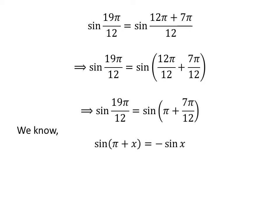We know the trigonometry identity sin of pi plus x is equal to minus sin of x. The proof of this trigonometry identity is explained in the video appearing in the upper right corner of this video. The link of the video is also given in the description section.